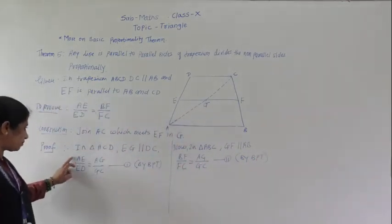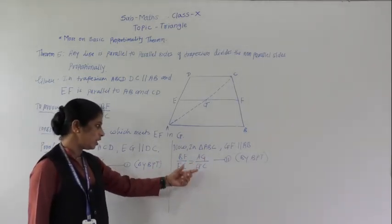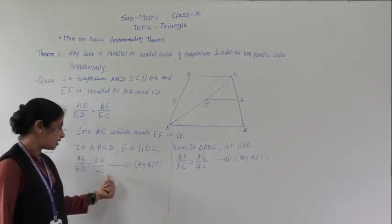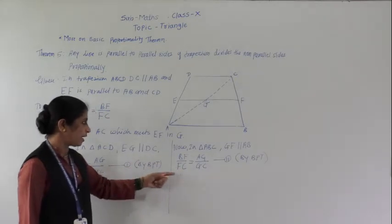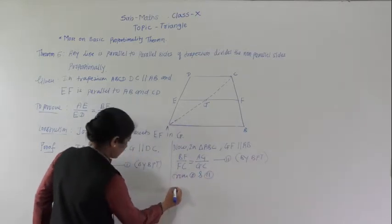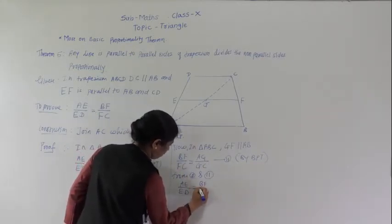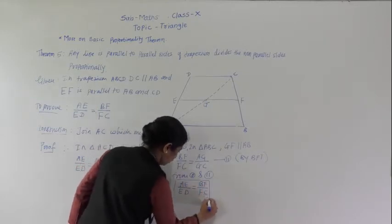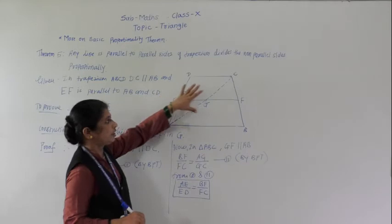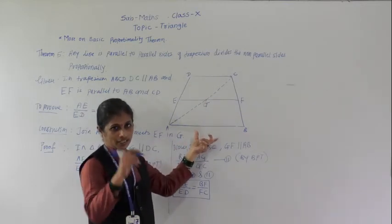From the first and second statements, since AG upon GC is common on the right-hand side: AE upon ED equals BF upon FC. Hence we have proved that a line parallel to the parallel sides of trapezium ABCD divides the non-parallel sides proportionally.